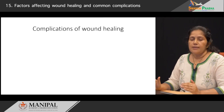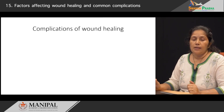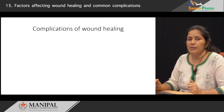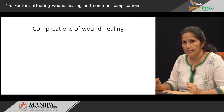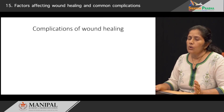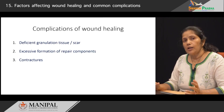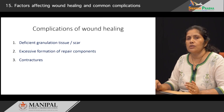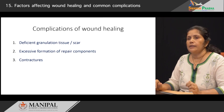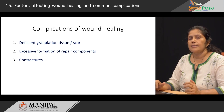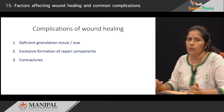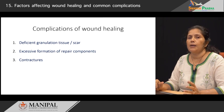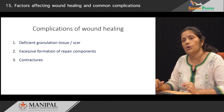In spite of the best attempts, sometimes there are complications in wound healing, and one must have the ability to recognize these at the earliest. These fall into three important categories. The first category is when there is deficient granulation tissue or deficient scar tissue formation. The second category arises when there is excessive formation of the repair components — meaning the components which take part in the formation of granulation tissue. The third is when patients develop contractures.